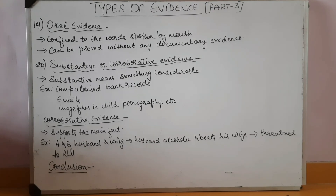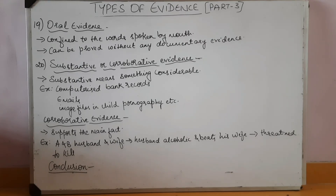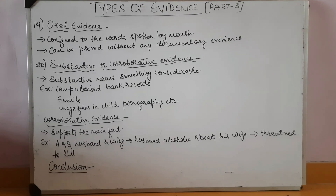Corroborative evidence is a fact which supports the main fact and enhances its evidentiary value. For example, A is tried for the murder of B, A and B being husband and wife. A's husband is alcoholic and used to beat his wife on a regular basis. He even threatened many times to kill her in her sleep. These facts may be taken into consideration by the court as corroborative evidence against the accused husband.